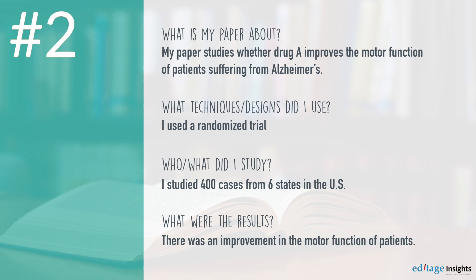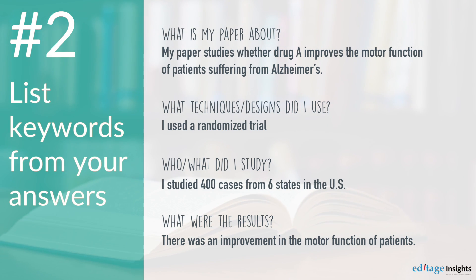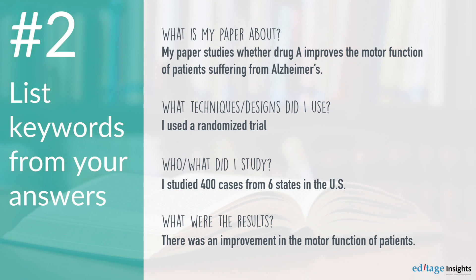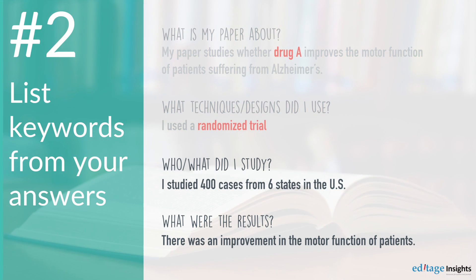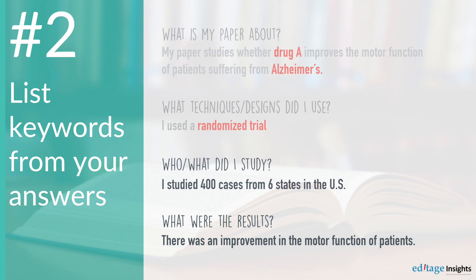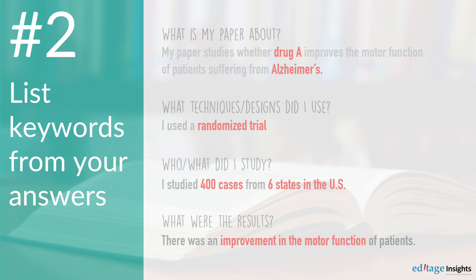Step 2. List keywords from your answers in Step 1. From the previous example, we get some keywords: Drug A, randomized trial, Alzheimer's, 6 states in the U.S., 400 cases, improvement in the motor function.